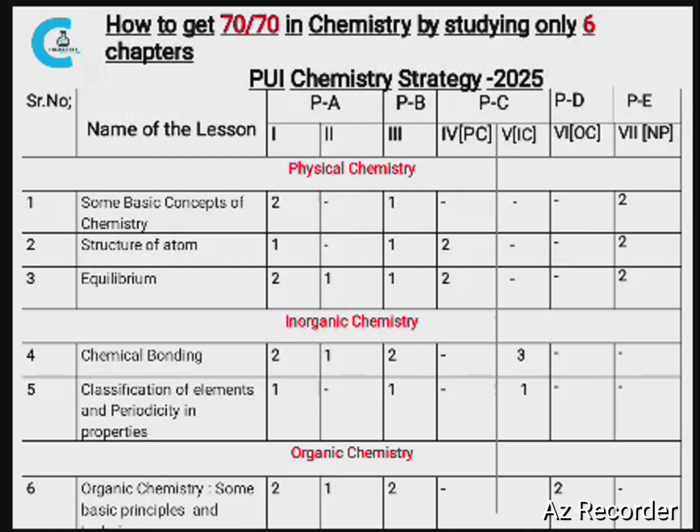In Part A, Roman numeral 1 belongs to MCQ and Roman numeral 2 belongs to fill in the blanks. If you want the model question paper solution — the model question paper given from the PU board 2025 — please comment below. I will try to make the video by tomorrow.